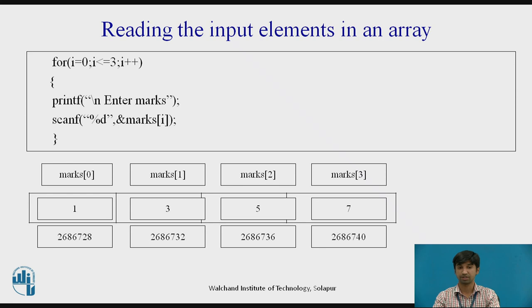So this is the address element. They are the address locations: 2686728, 2686732, 2686736, 2686740.